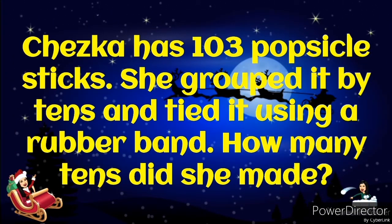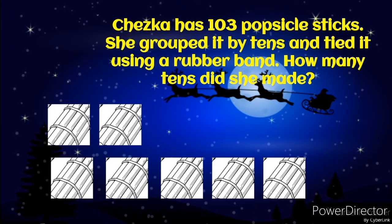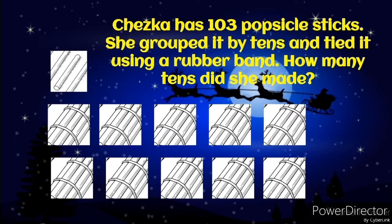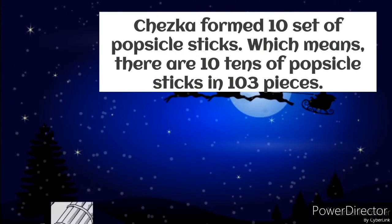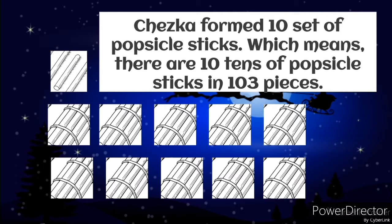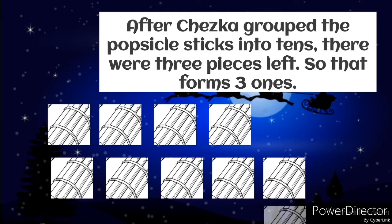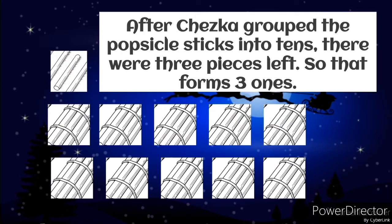Cheska has 103 popsicle sticks. She grouped them by tens and tied them using a rubber band. How many tens did she make? Now let's look at the illustration after Cheska is done grouping the popsicle sticks. Cheska formed 10 sets of popsicle sticks, which means there are 10 tens of popsicle sticks in 103 pieces. After Cheska grouped the popsicle sticks into tens, there were 3 pieces left, so that forms 3 ones.